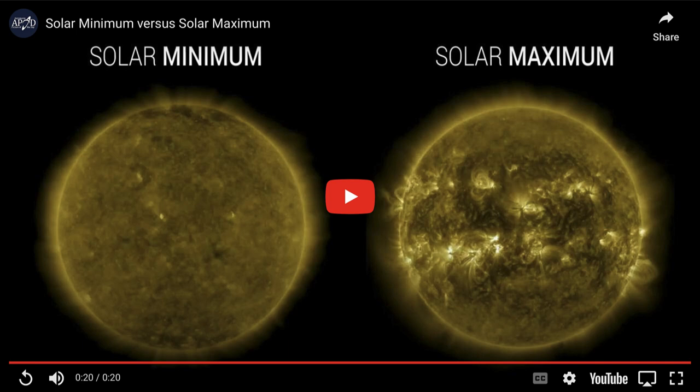The more active the sun is, so closer to solar maximum, we will see far more aurora. Now that doesn't mean we don't see them at solar minimum. As we noted in the video there are occasions when we do get some activity even at solar minimum, just far less than we do at maximum. So we can expect far more aurora over the coming years.